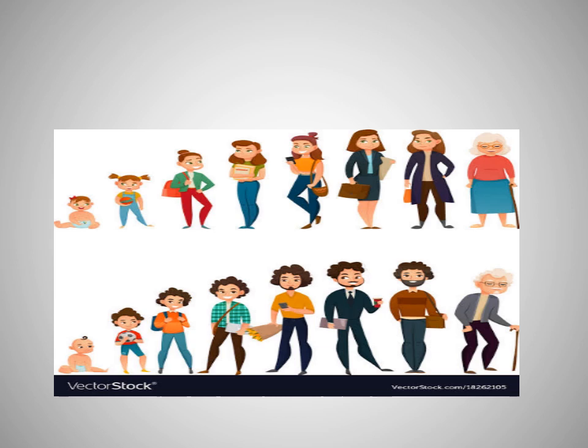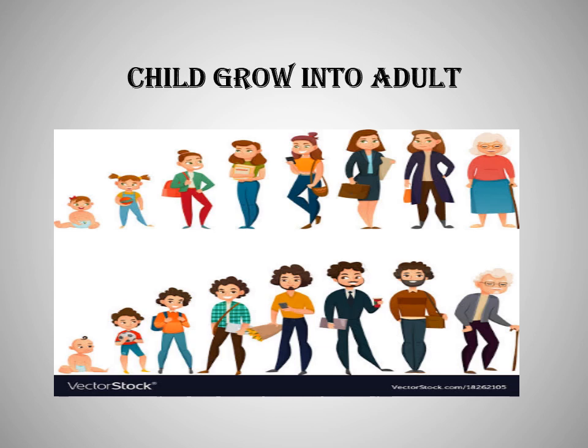These are the different stages of a child growing into an adult, as you can see in the figure. There is a baby boy or baby girl, then they become an adolescent child, then a college-going student, then they are doing jobs and becoming independent, then getting into a family, and finally becoming old. After this old age, a human being dies. These are the different stages when a human being grows into an adult man or woman.